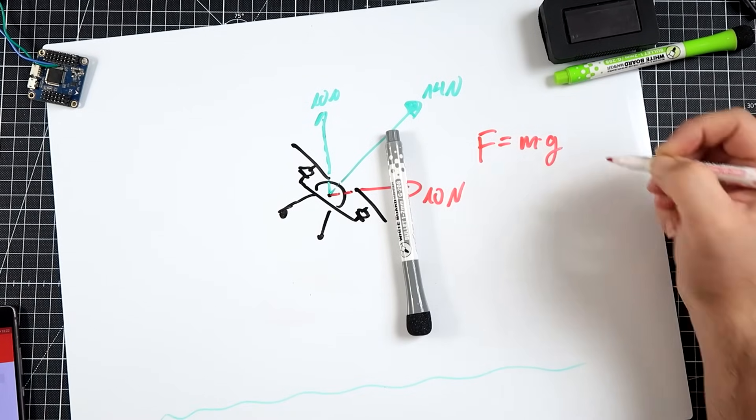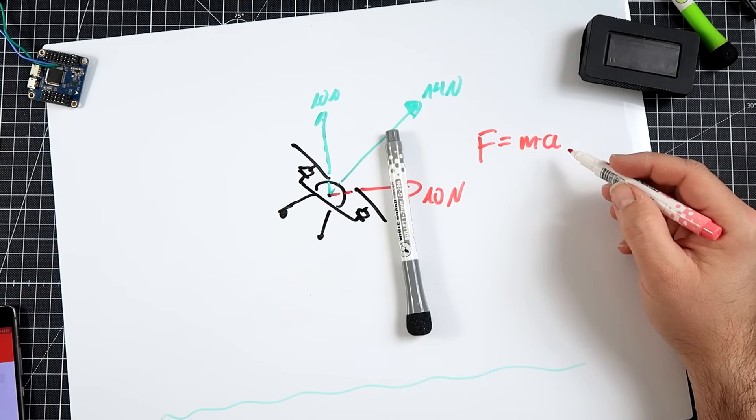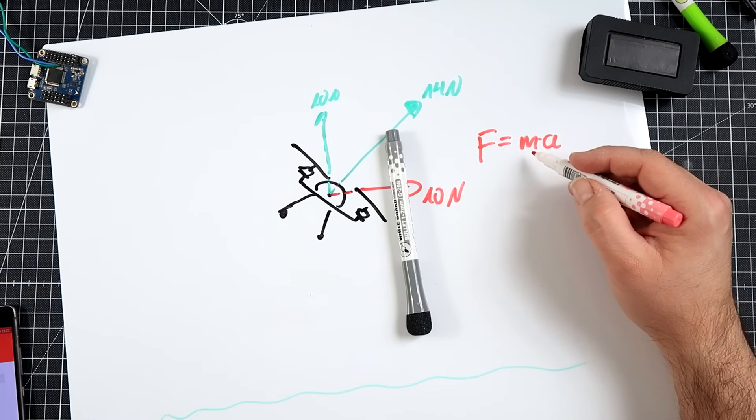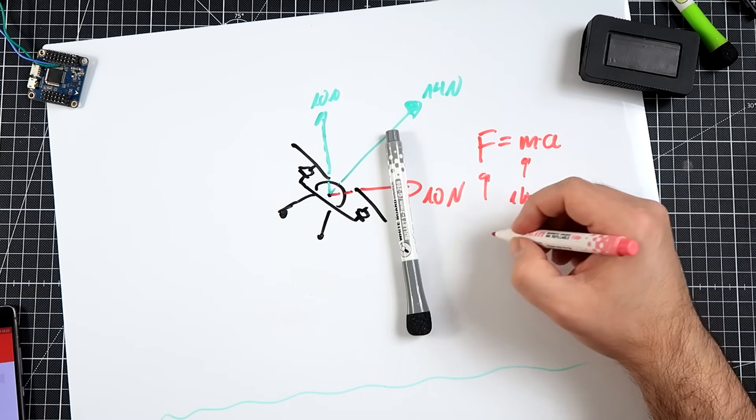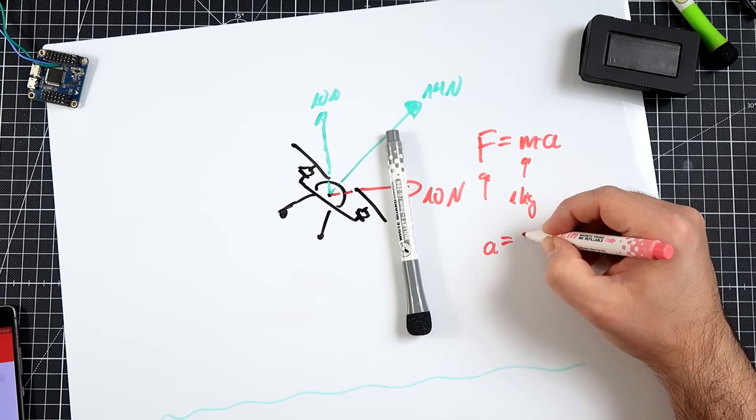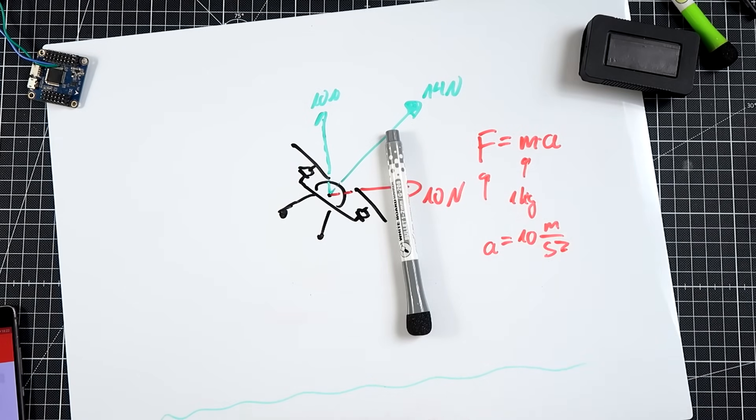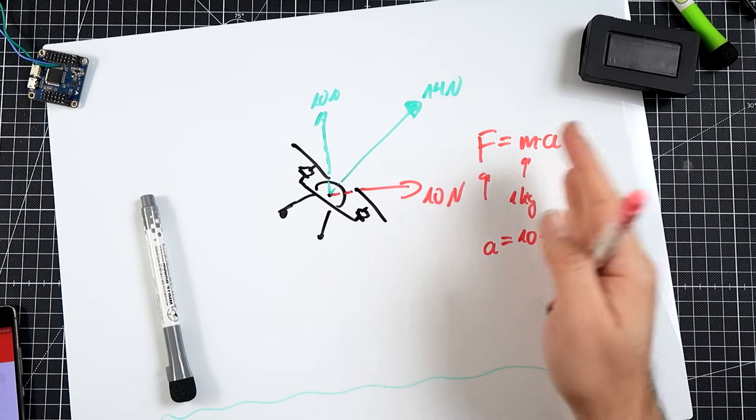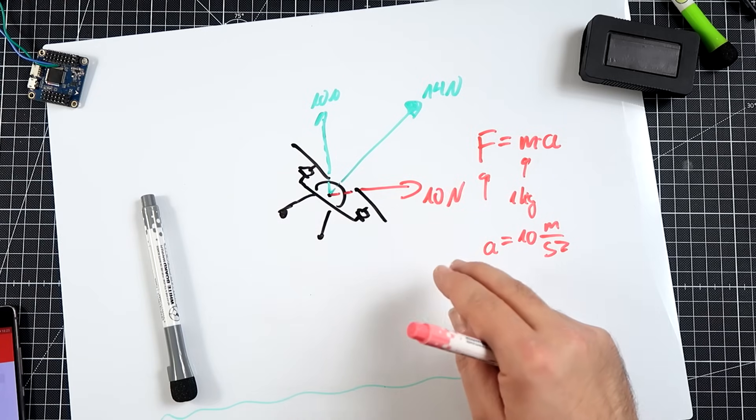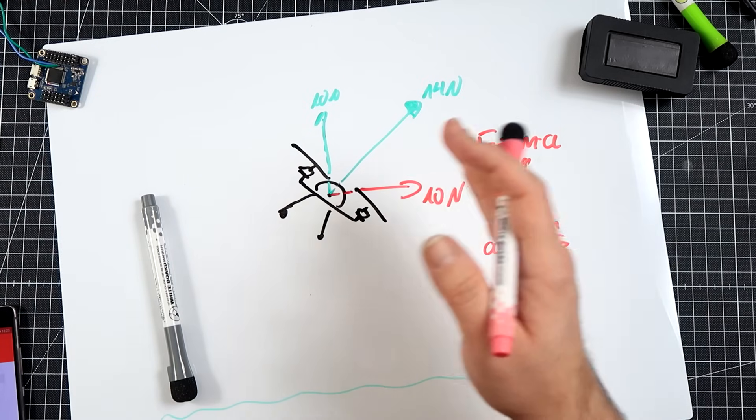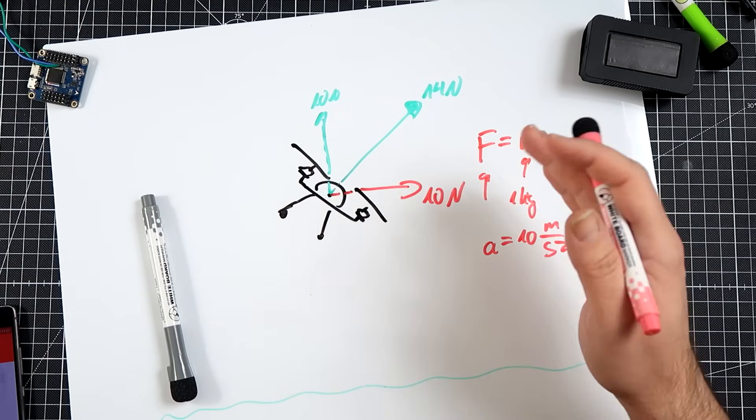Once again, F equals mass times acceleration. We don't know the acceleration, we know the force, we know the mass because it's still 1 kilogram. The force is 10 newtons. That means the acceleration equals approximately 10 meters per second squared. After 1 second it will accelerate to 10 meters per second. After 2 seconds it will gain another 10 meters per second, so it will be 20 meters per second, and so on.